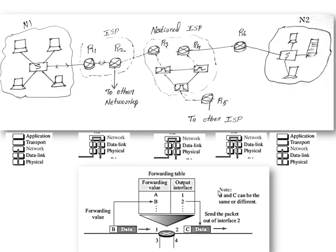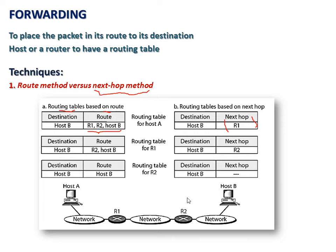Both a host and a router, when they have a packet to transmit, must have a forwarding and routing table containing information about the destination network address and the interface. To reduce complexity when more devices are in the network, rather than having all information, we can use the next hop method, where the routing table only needs information about the next hop router or destination device. Thank you.